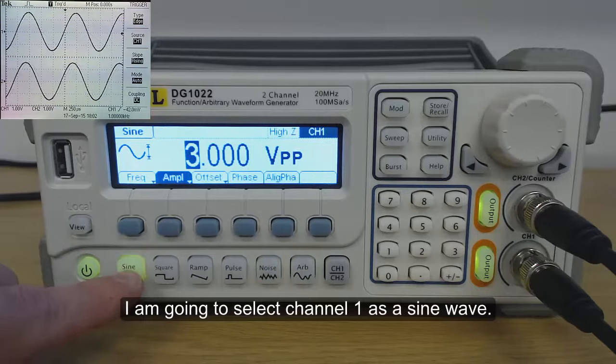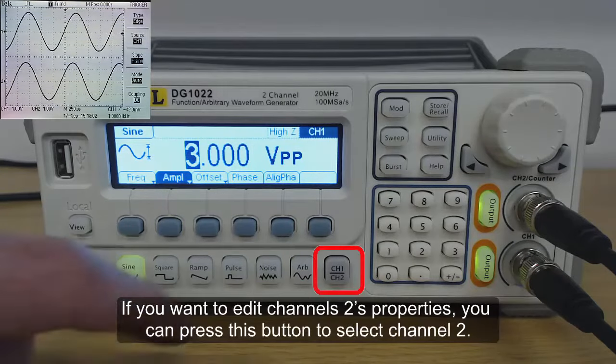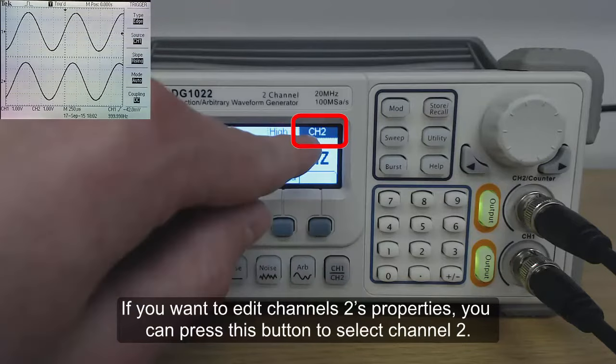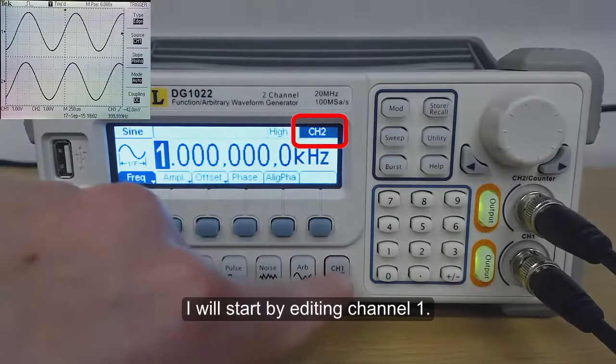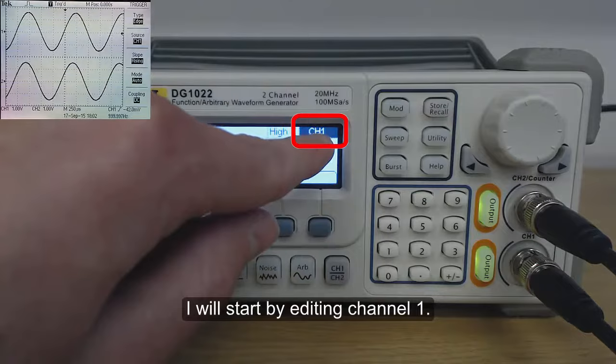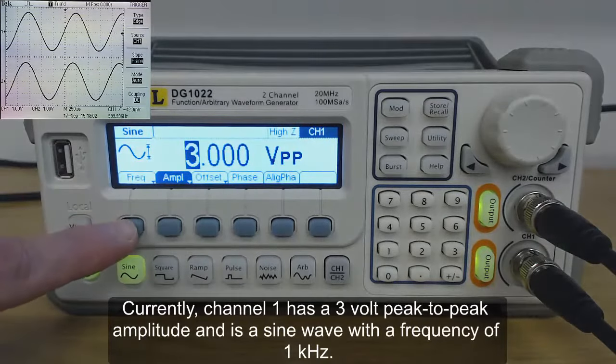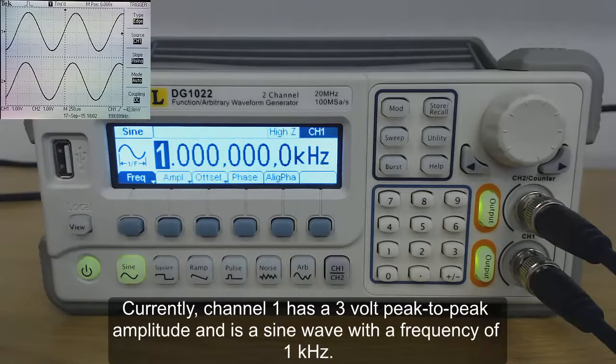I'm going to set channel 1 as a sine wave. If you want to edit channel 2's properties you can press this button to select channel 2. I will start by editing channel 1. Currently channel 1 has a 3V peak to peak amplitude and is a sine wave with a frequency of 1kHz.